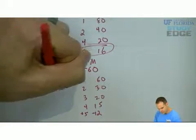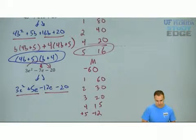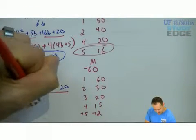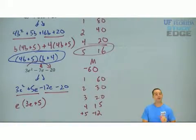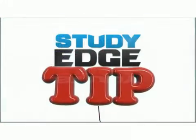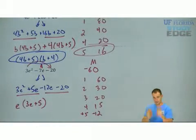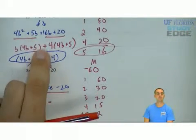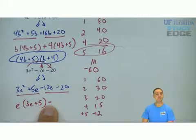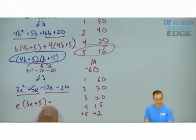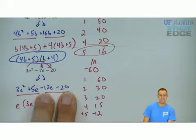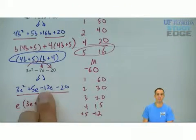All right, first two terms, last two terms. What's in common with the first two? Just an e. I'm left with 3e plus 5. Now, here's a little extra for you. You always drop the middle term. So if it's a minus, you drop the negative. If it was a plus, you bring down the positive, which means you're going to factor out a negative. Looking at negative 12e minus 20.